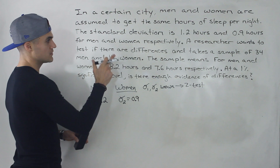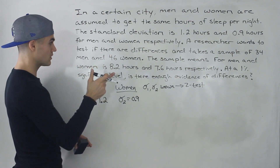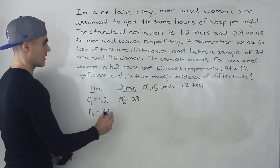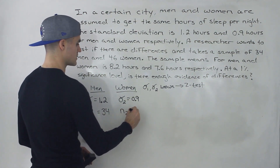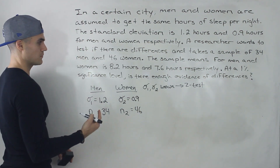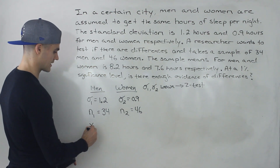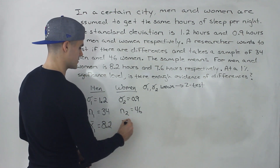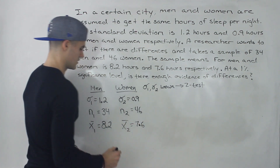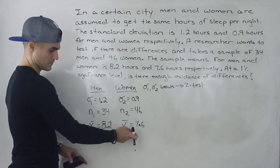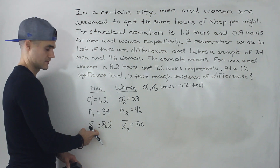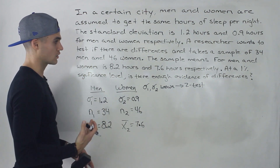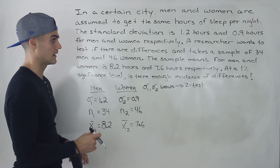A researcher takes a sample of 34 men and 46 women, so n1 = 34 and n2 = 46. The sample means are 8.2 hours and 7.6 hours respectively, so x̄1 = 8.2 and x̄2 = 7.6. From the samples, the average for women is less than for men. However, we have to test if that's enough evidence — with sample sizes of 46 and 34 — to conclude there are differences in sleep patterns.